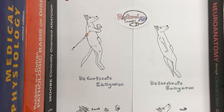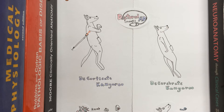Here on the left we have the decorticate kangaroo, and on the right we have the decerebrate kangaroo. Abnormal posturing itself is going to occur for a variety of brain issues, many of which cause an increase in ICP or intracranial pressure, and all of which are causing some sort of lesion to occur. Now both of these positions are considered medical emergencies, indicating a much larger and more dangerous issue going on within the brain.